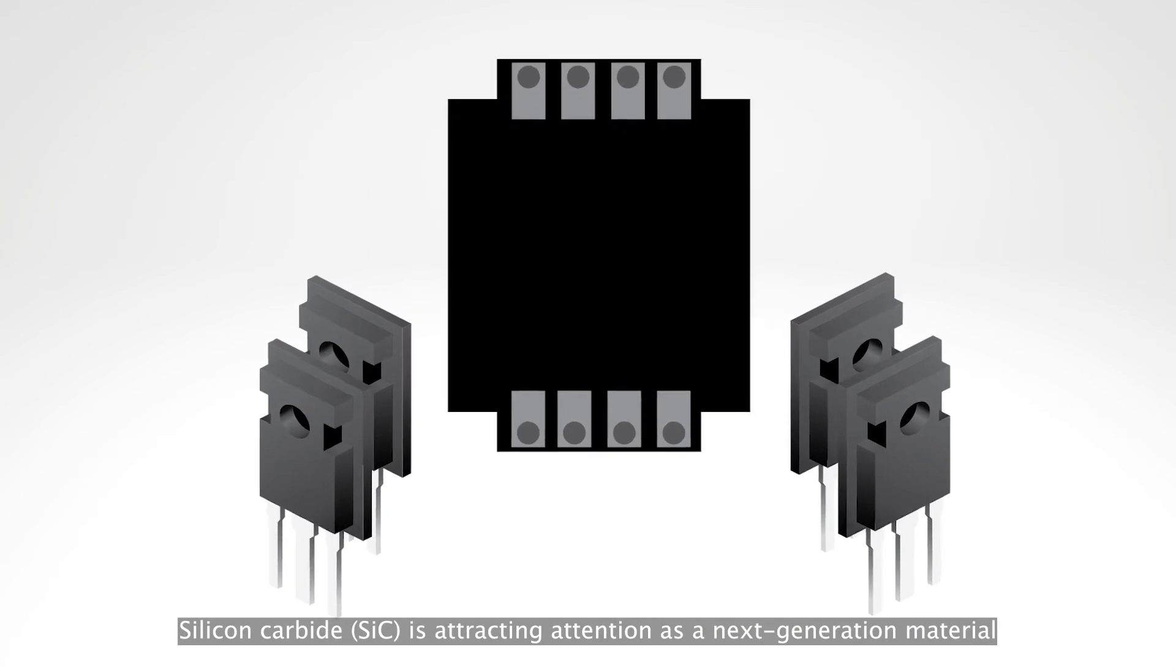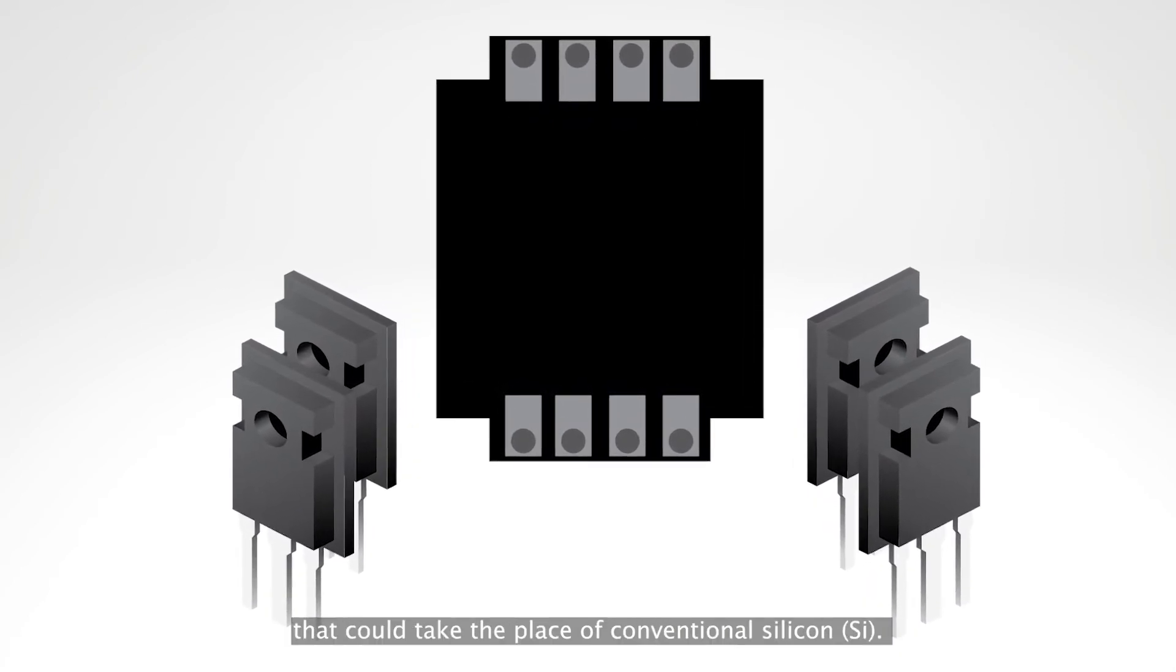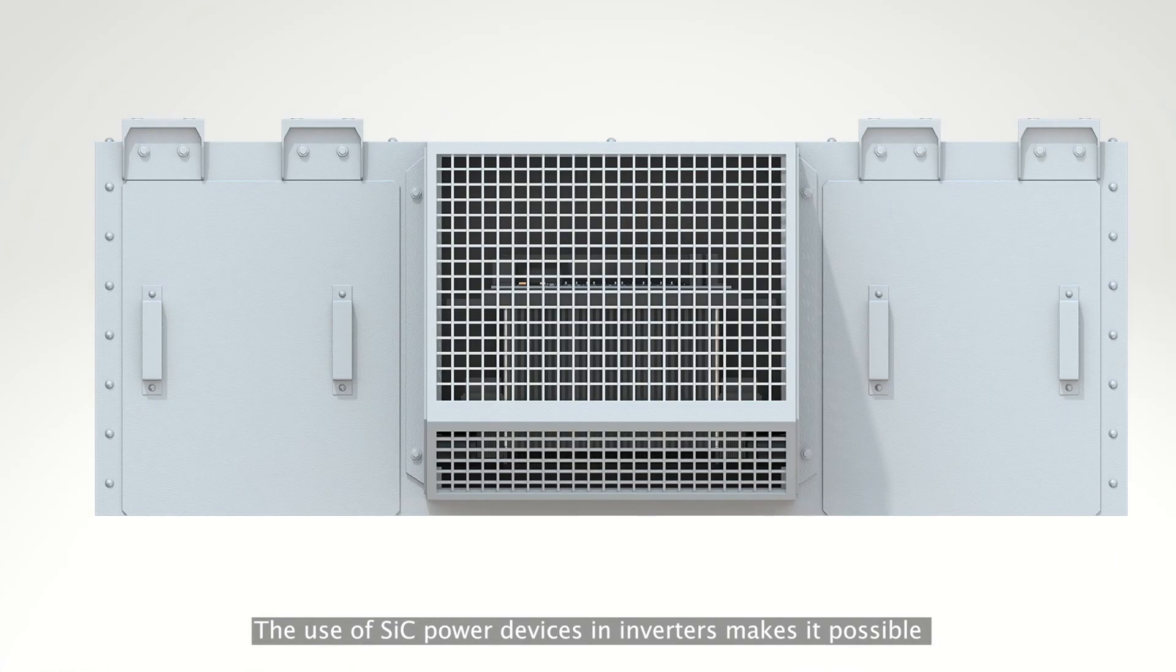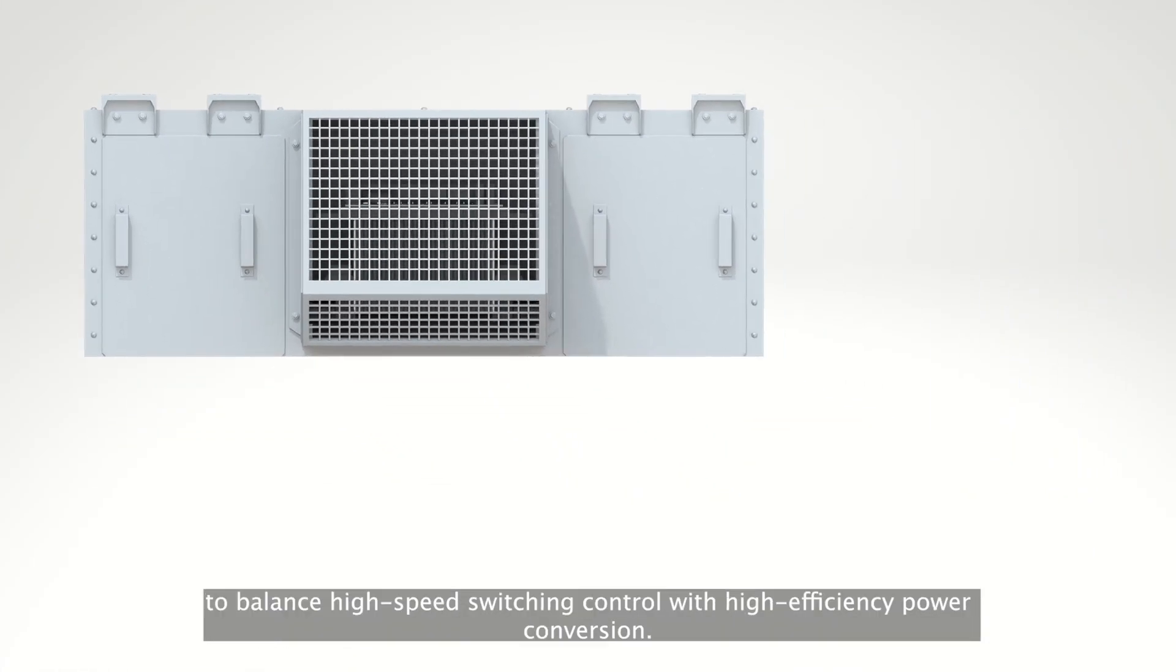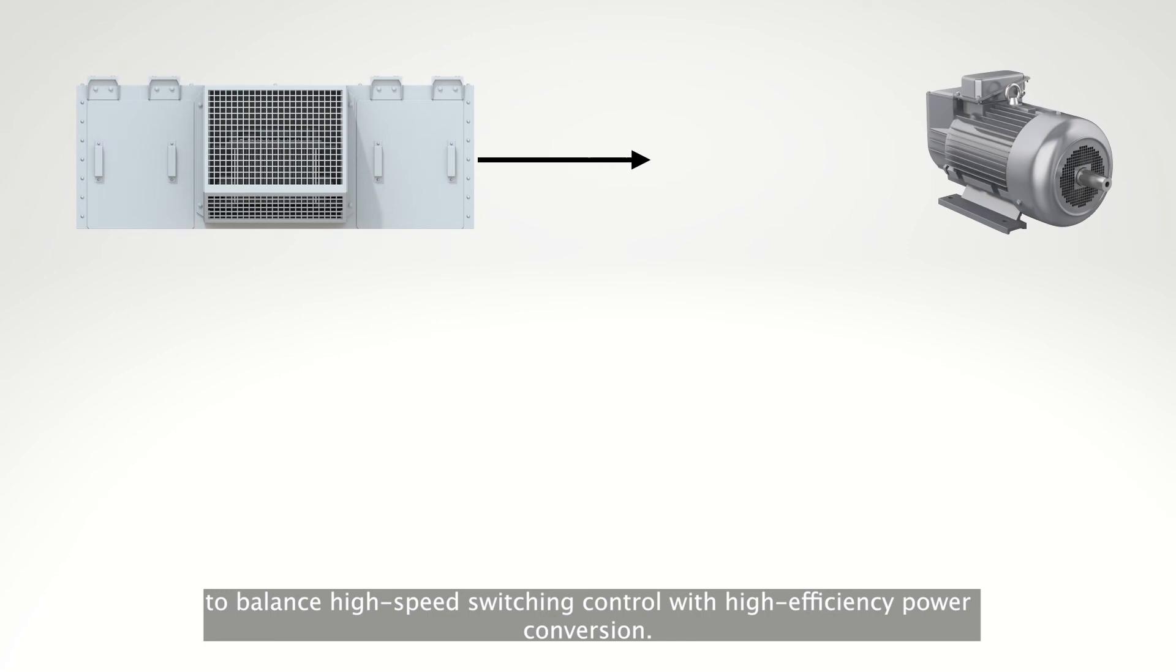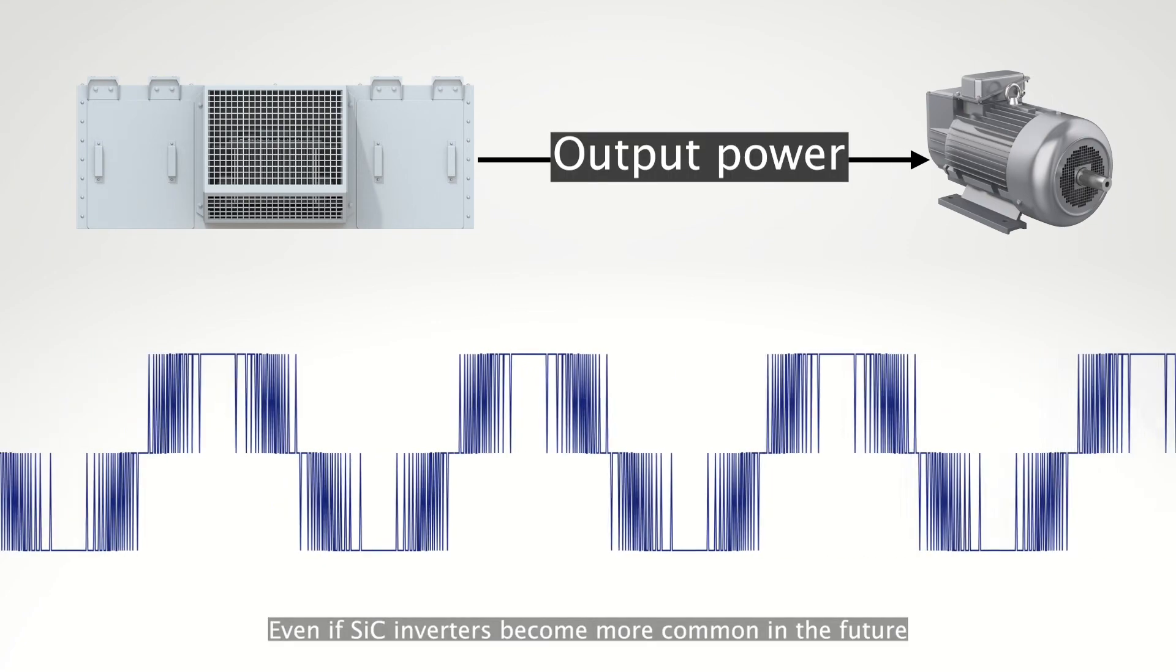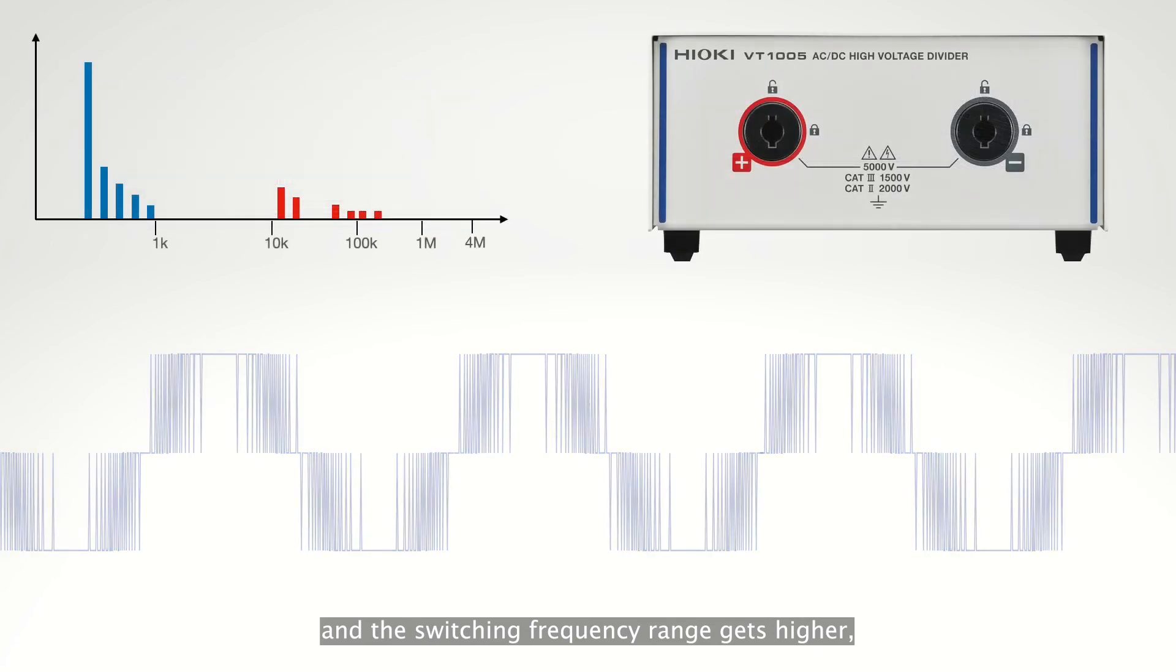Silicon carbide is attracting attention as a next generation material that could take the place of conventional silicon. The use of SiC power devices in inverters makes it possible to balance high speed switching control with high efficiency power conversion. Even if SiC inverters become more common in the future and the switching frequency range gets higher,